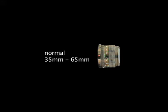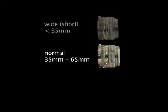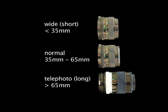A 35mm normal lens has a focal length of 35mm to 65mm. Wide or short 35mm lenses are typically considered to be lenses with a focal length less than 35mm. 35mm lenses with a focal length greater than 65mm are considered to be telephoto or long lenses. Zoom lenses are lenses that have the ability to change the focal length.